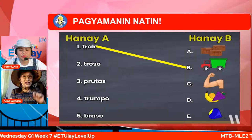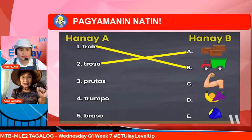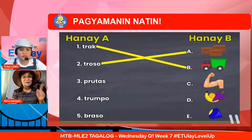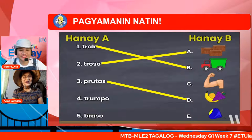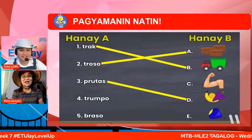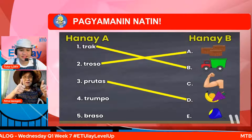Gumako naman tayo sa pangatlong bilang — kambal katinig na prutas. Aling kaya dito? Letrang C, D, o E? Isulat ninyo ang sagot sa top box. Kung ang isinulat mo ay letrang D, nako, ang galing-galing mo. Pang-apat na bilang — kambal katinig na tronko. Letrang C o letrang E? Kung ang isinulat mo sa top box ay letrang E, napakagaling mo — dalawang thumbs up ang ibibigay sa iyo. Panghuling bilang — kambal katinig na braso. Kung ang isinulat mo ay letrang C, tama ang iyong sagot.